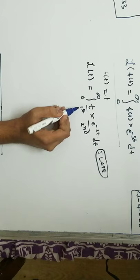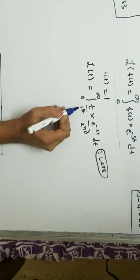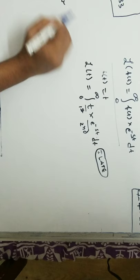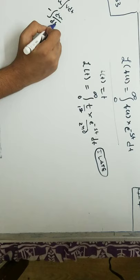Now for solving this we need to use the UV rule. This is the UV rule: integral of uv dt equals u times integral of v dt minus integration of du/dt times integral of v dt, the whole thing dt.